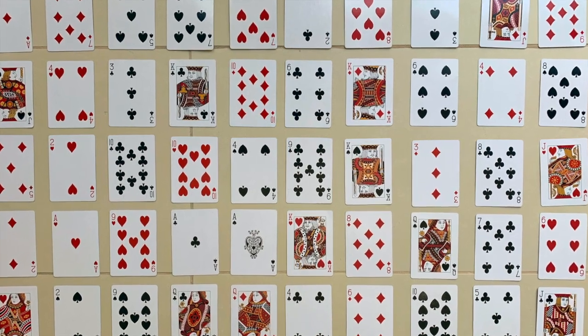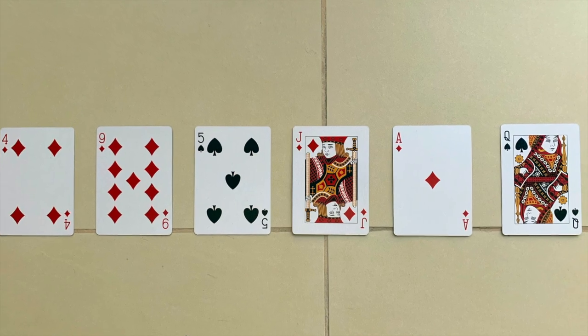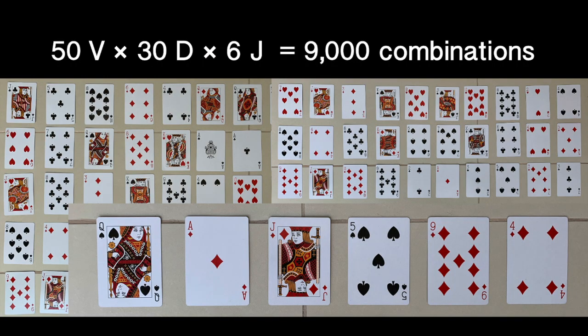Our cells have around 50 V segments, 30 D segments, and 6 J segments for the heavy chains of antibodies. That already gives us 9,000 different combinations for the heavy chains.